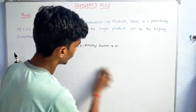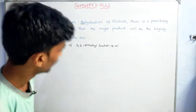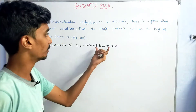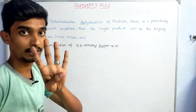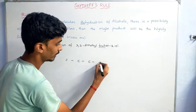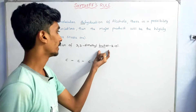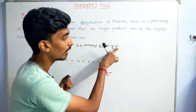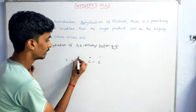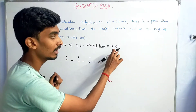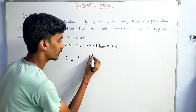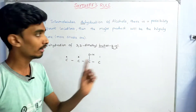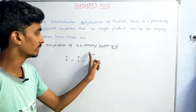Now let's look at the example from the book: dehydration of 3,3-dimethylbutane-2-ol. Butane means 4 carbons: 1, 2, 3, 4. It is butane-2-ol, so the OH is at the 2nd position. Then 3,3-dimethyl means there are 2 methyl groups on the 3rd carbon. So we draw 4 carbons, place OH at carbon 2, and add two methyl groups at carbon 3.